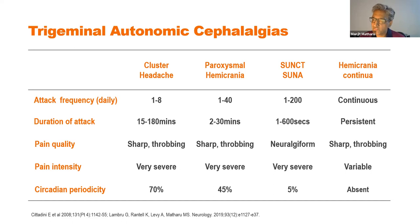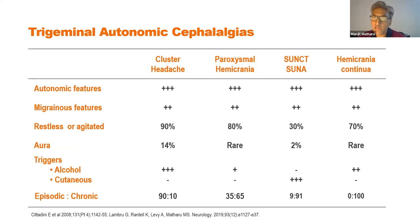One of the signature features is circadian and circannual periodicity. About 70% of patients report attacks occurring at about the same time each day. Episodic patients also often see attacks recurring at about the same time each year for about the same duration. Migrainous symptoms such as photophobia, phonophobia, osmophobia, nausea, and vomiting are also very common. Take a full history but look at the big picture — the prominent aspects of the phenotype will give you the diagnostic clue.